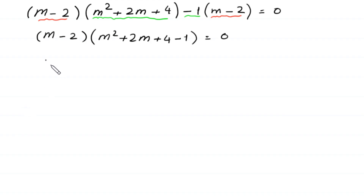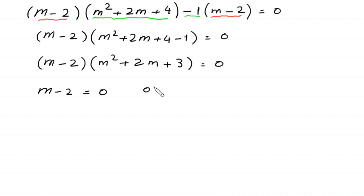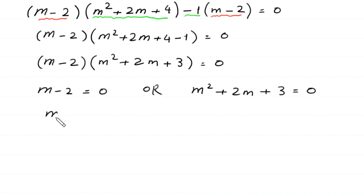So our factored equation is m minus 2 times m squared plus 2m plus 3 is equal to 0. From here, either m minus 2 is equal to 0, or m squared plus 2m plus 3 is equal to 0.